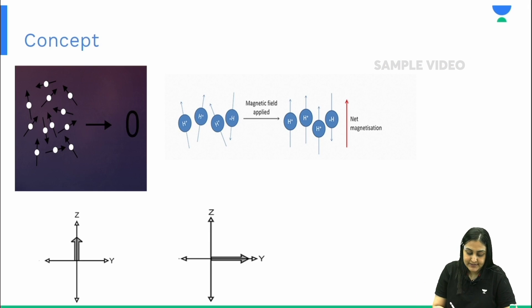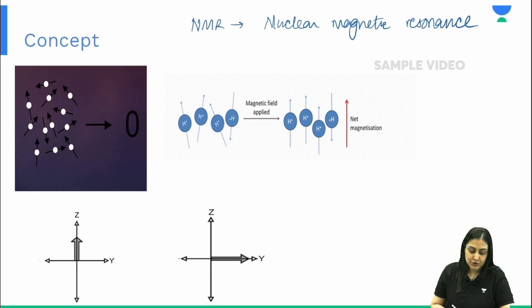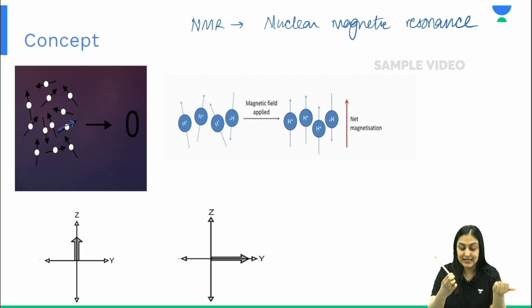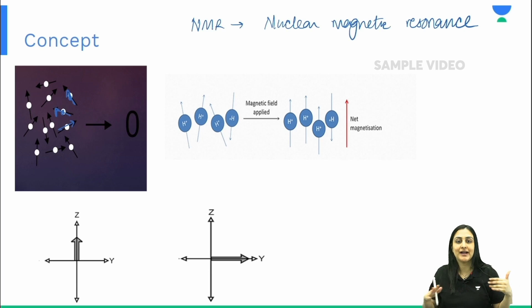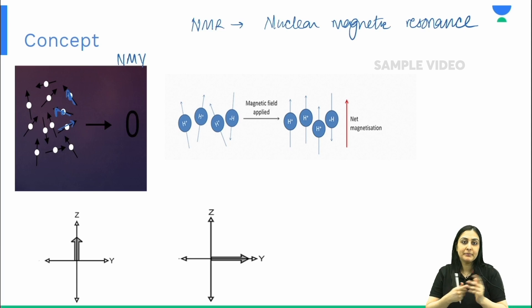The concept behind MRI is described as NMR — nuclear magnetic resonance. Normally, all the protons in our body are spinning, and when any charged particle spins, it generates a small magnetic field around itself. These are tiny magnetic dipoles that are all randomly oriented in our body, so the net magnetic vector becomes zero. We are not magnetic per se — we don't bump into metals.